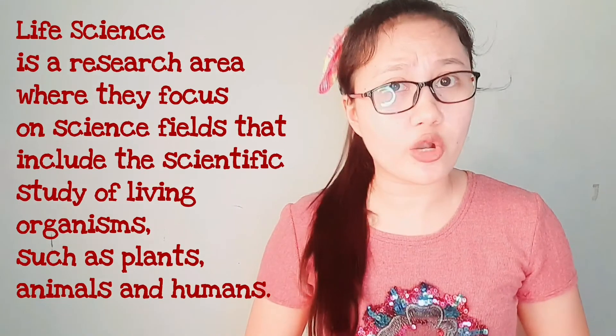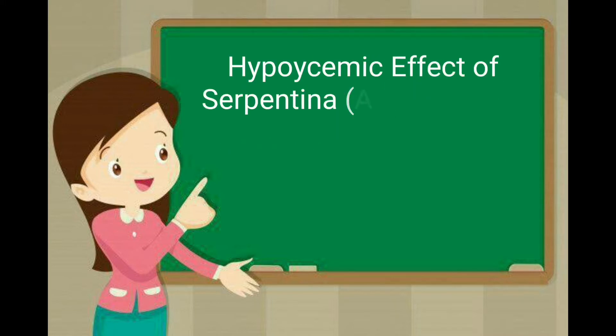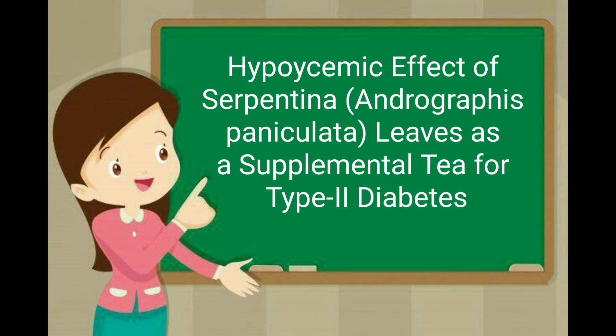Life science is a research area focused on science fields that include the scientific study of living organisms such as plants, animals, and humans. The study of organism behavior is included only if it has a distinctly biological dimension. Research studies under life sciences are commonly related to agriculture, fisheries, food and biology, biochemistry and biotechnology, ecology, evolution, environment, and genetics and heredity. Examples include the antibacterial activity of catmon (Dillenia philippinensis Rolfe) against Streptococcus pyogenes, and the hypoglycemic effect of serpentina (Andrographis paniculata) leaves as a supplemental tea for type 2 diabetes.